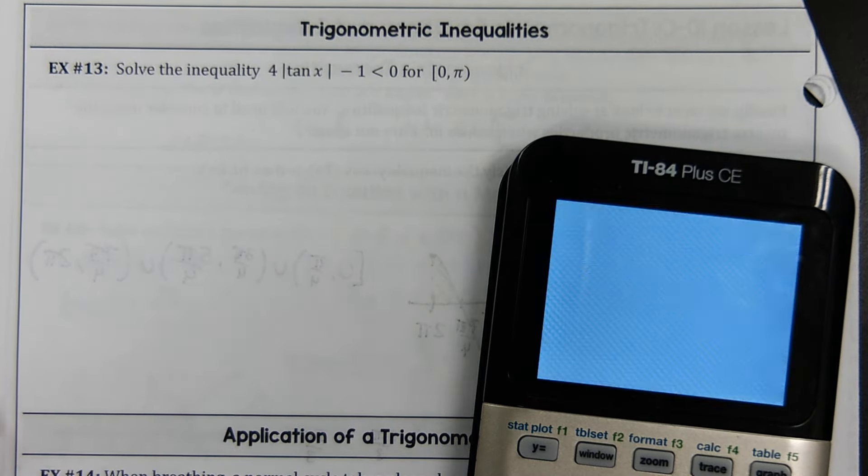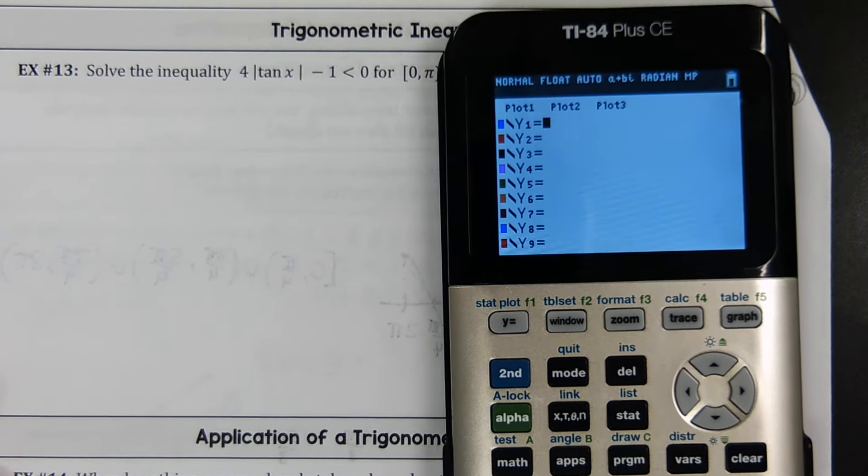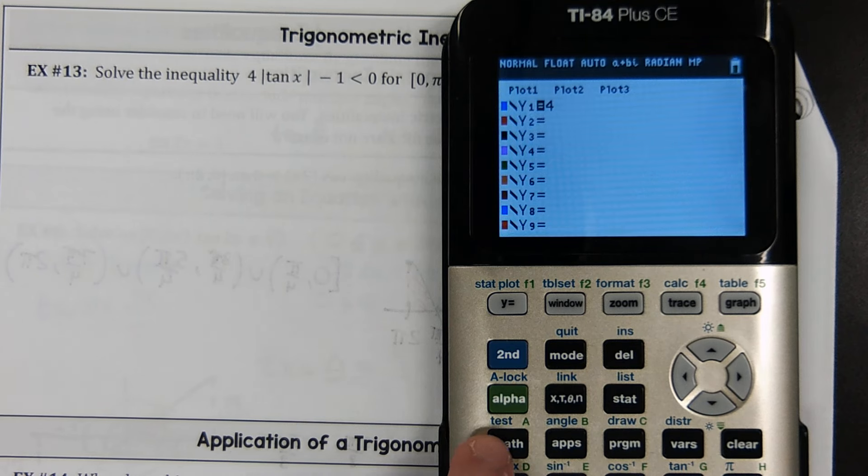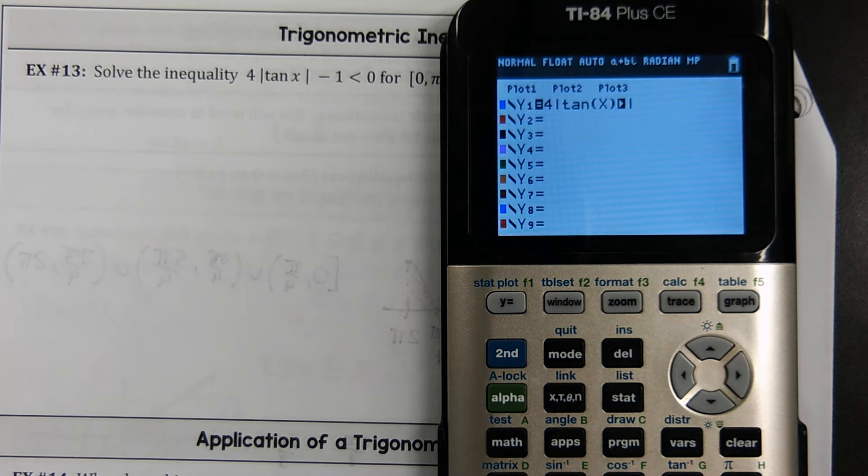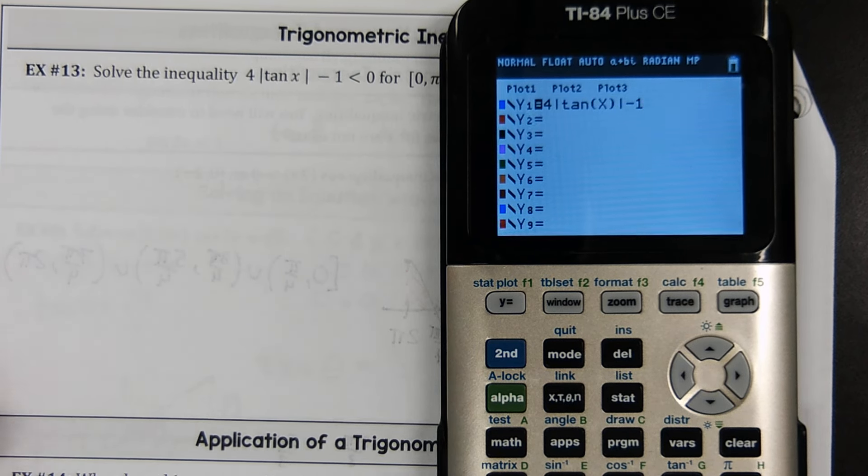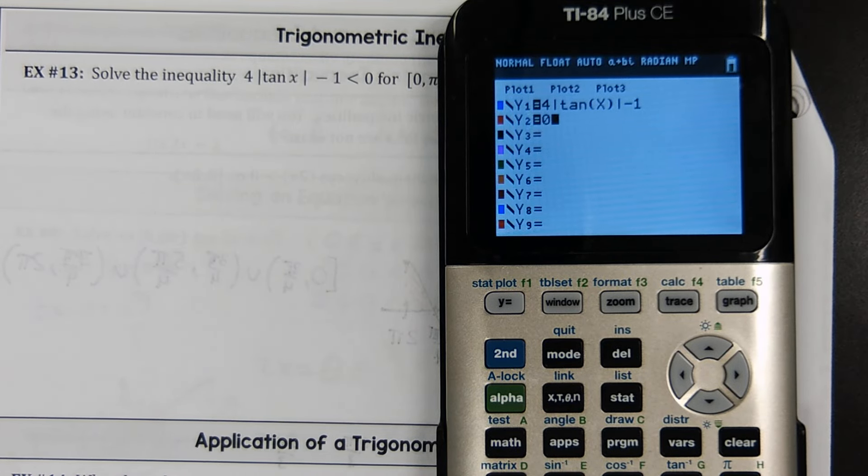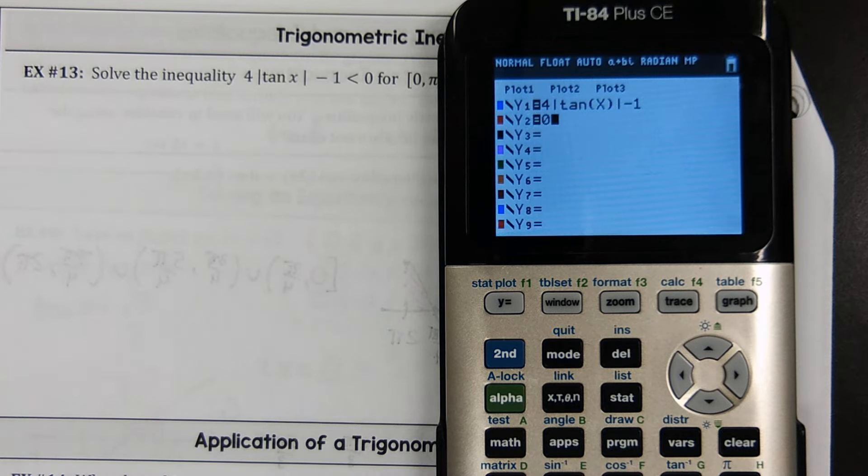So directly to the calculator. Go to y equals. And we got 4. The absolute value bars are a math structure. So go into math over to number abs. That's where you're going to find absolute value bars. We have tangent of x. Make sure that you close your argument on your tangent. And then minus 1.